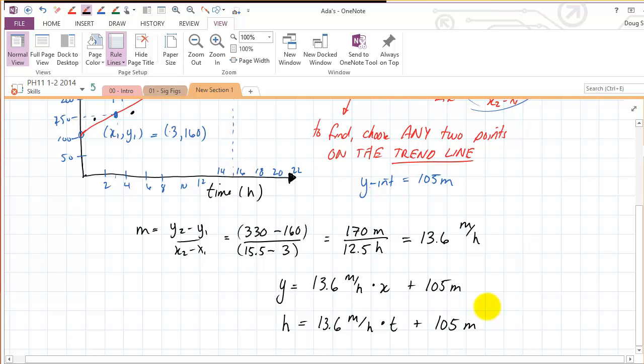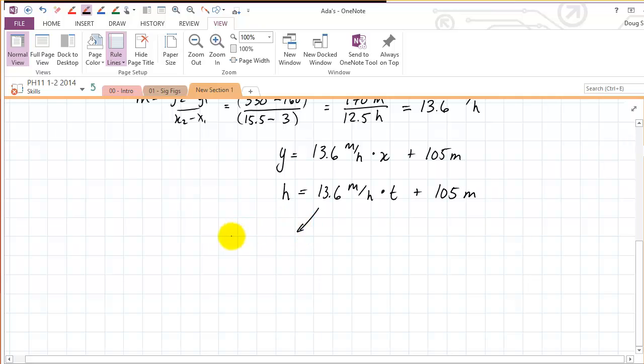So there we have it. So a couple of things to note on this, this is the slope. Slopes, generally speaking, refer to a rate of change. So in this case, we're talking about the rate that elevation changes with time. And y-intercept generally talks about starting conditions. So in this case, 105 is the starting elevation.